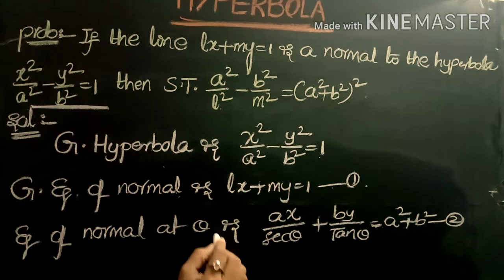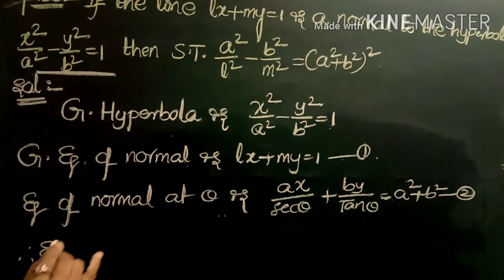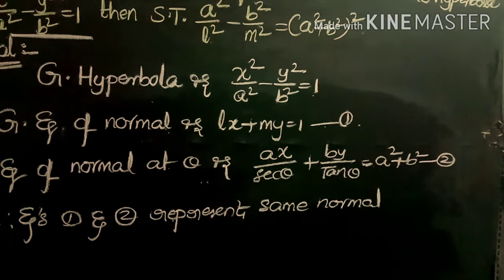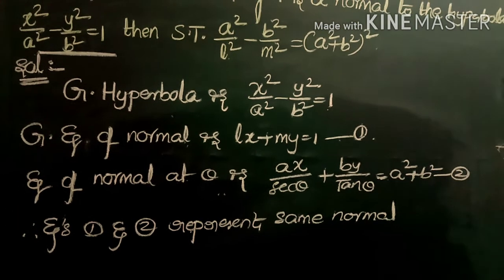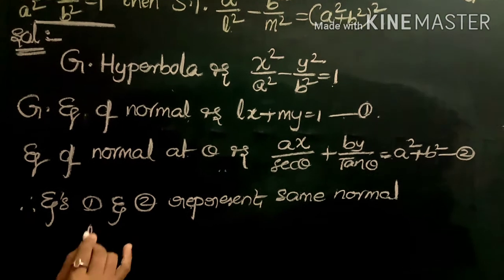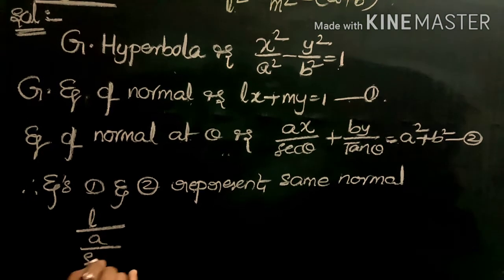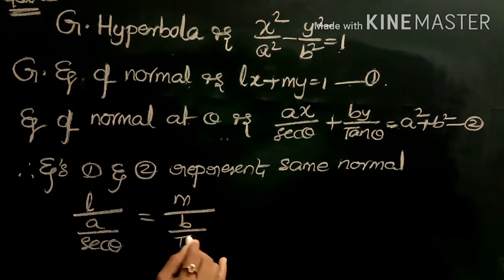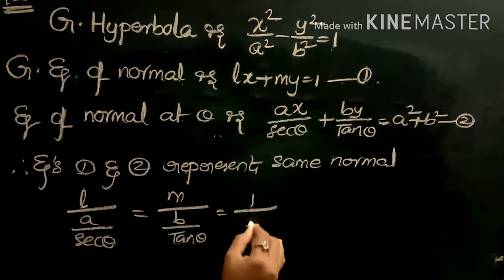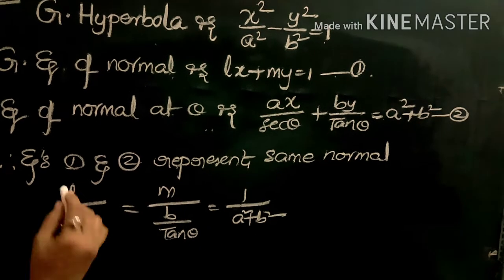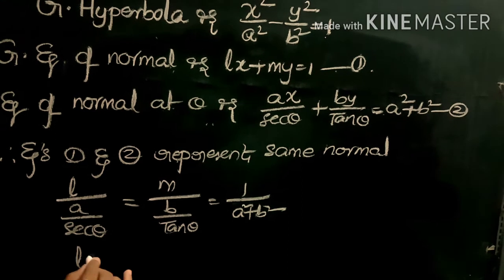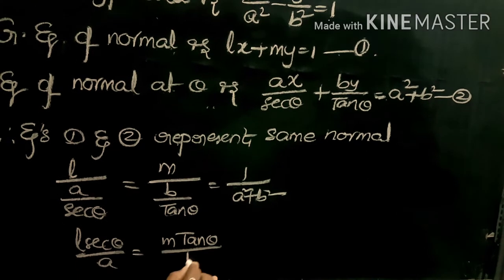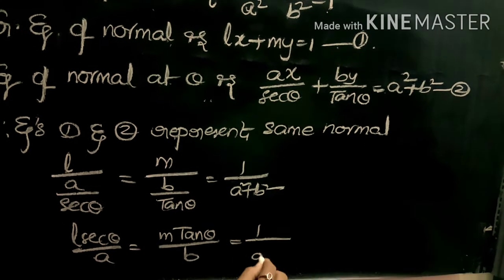Since equations 1 and 2 represent the same normal, we equate the ratio of their coefficients: l divided by (a/sec θ) equals m divided by (b/tan θ) equals 1 divided by (a² + b²). This gives us l·sec θ / a = m·tan θ / b = 1 / (a² + b²).